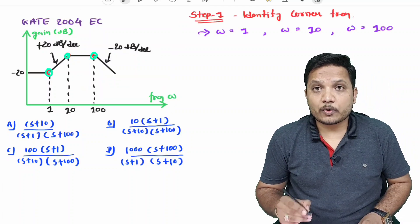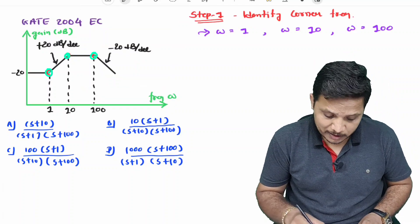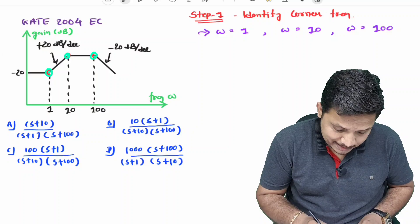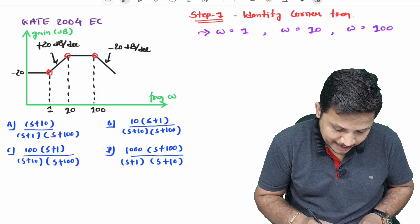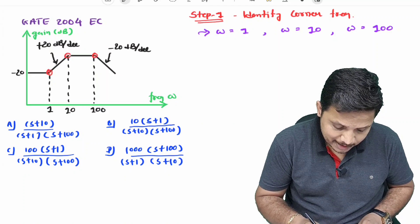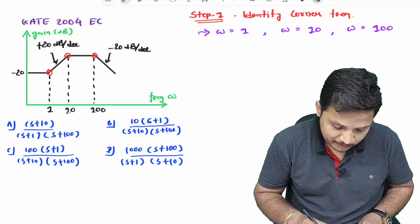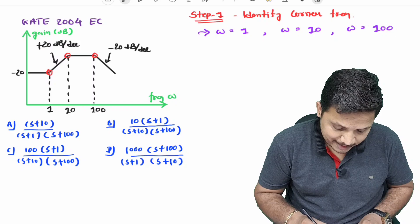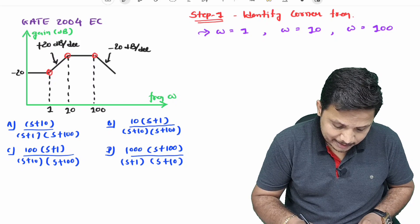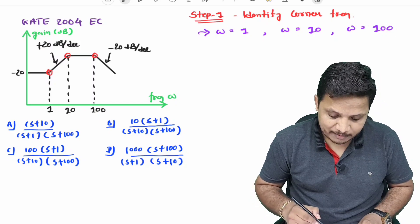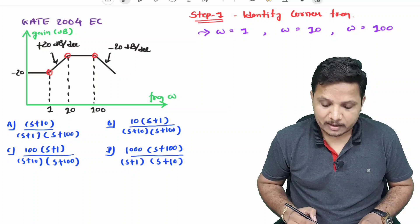You can observe that at the first instant, the corner frequency is 1 radian per second. At the second instant, the corner frequency is 10 radians per second. And at the third instant, the corner frequency is 100 radians per second.